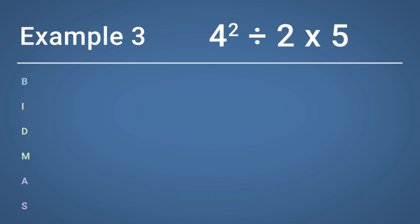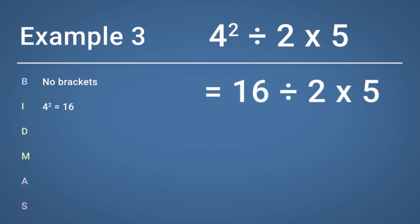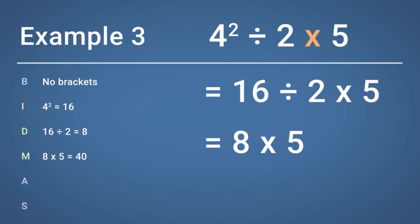Calculate 4 squared divided by 2 multiplied by 5. Working our way through BIDMAS, there are no brackets, so we move on to indices. Here we have 4 squared, which is the same as 4 multiplied by 4, which equals 16. So we now have the sum 16 divided by 2 multiplied by 5. Next, carry out any multiplication or division in the order given. Division comes first: 16 divided by 2 equals 8, giving us 8 multiplied by 5. Carrying out multiplication next, 8 multiplied by 5 equals 40. We are now left with no further operations, so 40 is the final answer.